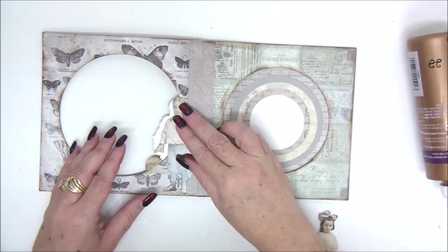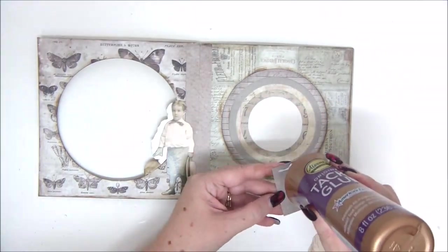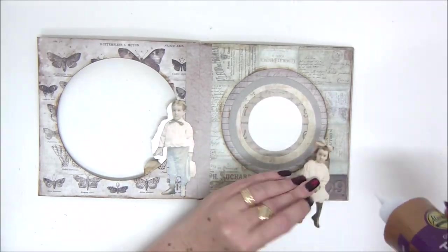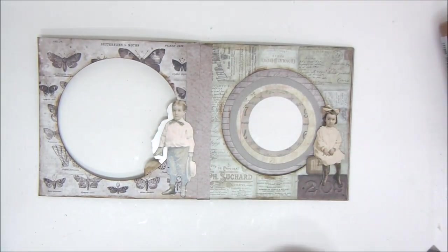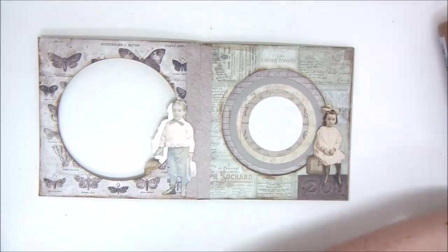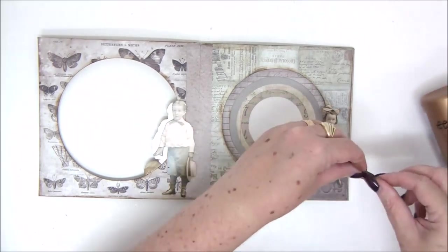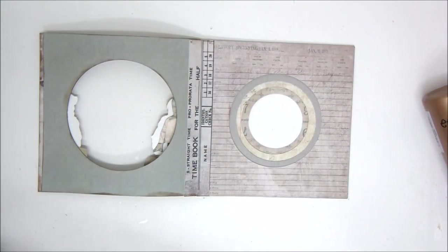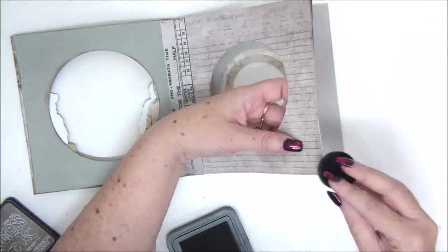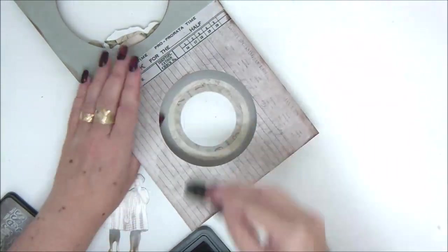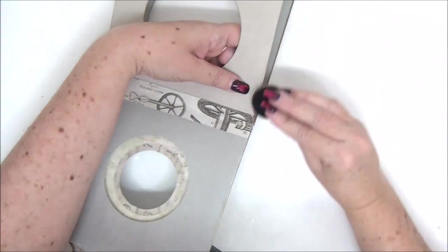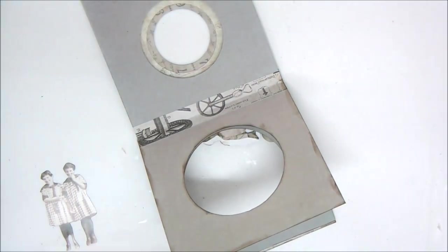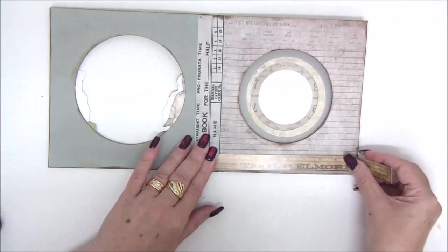I just felt like doing a steampunk themed book here. I'm adding a little clock that I've cut from one of the pages. I'll put the specific paper collections and other embellishments in the supply list in the description if you want to get the exact same thing. Again, you don't have to.